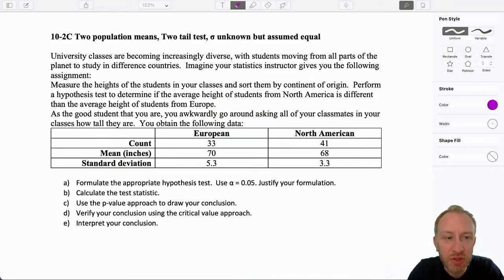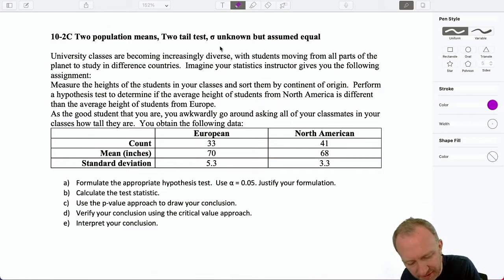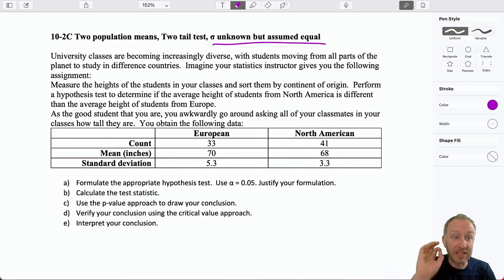Hello everybody and welcome to our next exercise, another test on two population means. This time a two-tail test and we're still going to make this assumption that sigma is unknown but we're assuming that they are equal.